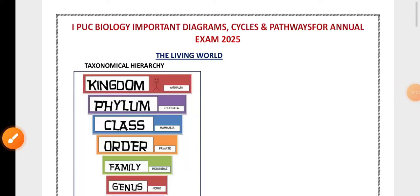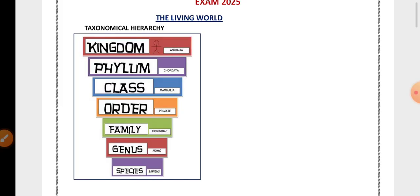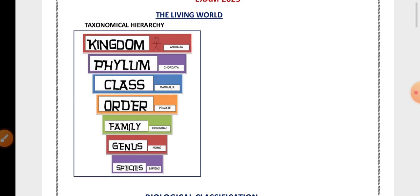Hello students, in FHPC biology most of the major questions for three marks and five marks are related to diagrams, some cycles, and some pathways. In this video we are going to see some of the most important pathways, flowcharts, cycles, and diagrams which are supposed to come for the exam — starting with the first chapter, the Living World, taxonomic hierarchy.